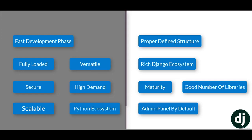The next feature is library support. If you want to work with APIs, there is the Django REST framework. If you want to work with a CMS, there is Wagtail and Mezzanine. If you want to work with a messaging app, there are several other libraries. You can work with maps, you can work with payments — all have their own dedicated libraries. This is really cool.